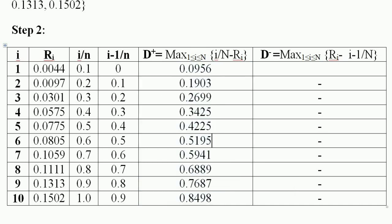Looking at all the D+ values, the maximum value is 0.8498. So D+ = 0.8498. Now let us calculate D−.